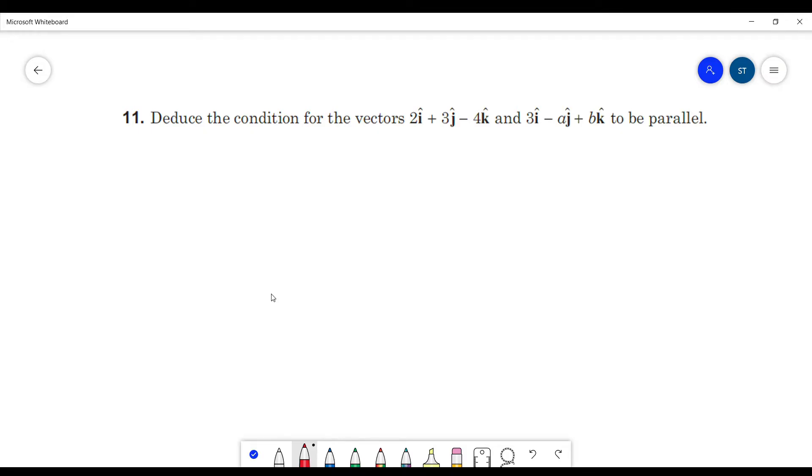So in this question we have to deduce the condition for the vectors 2i cap plus 3j cap minus 4k cap and 3i cap minus aj cap plus bk cap to be parallel.